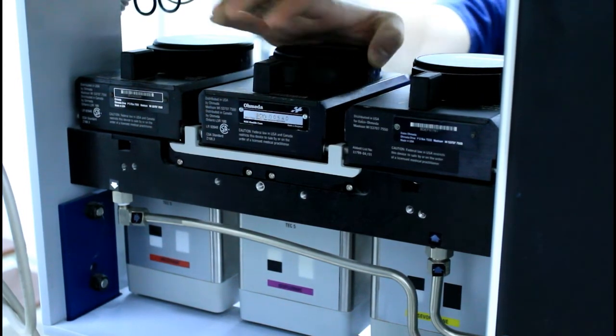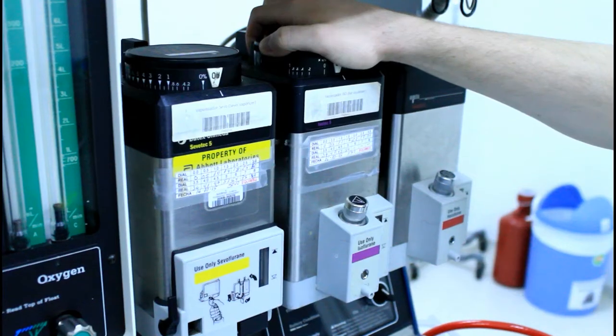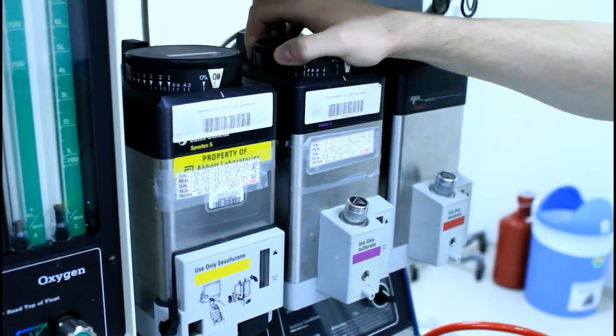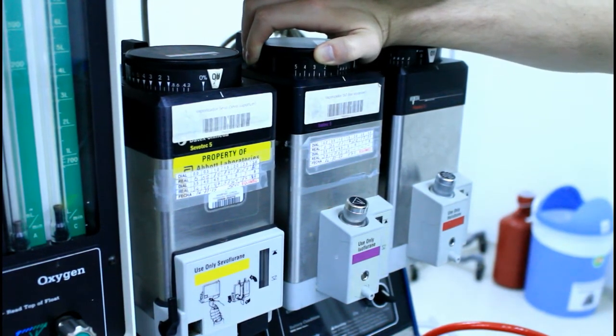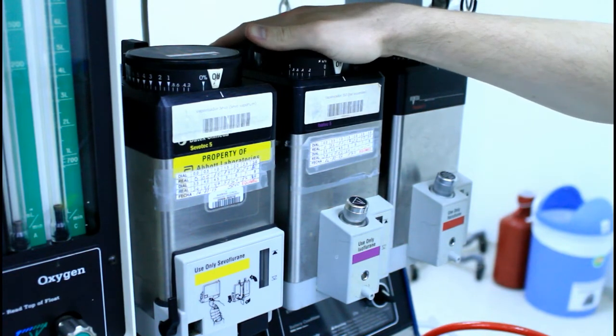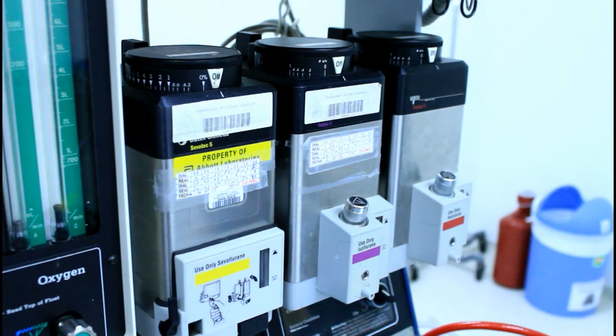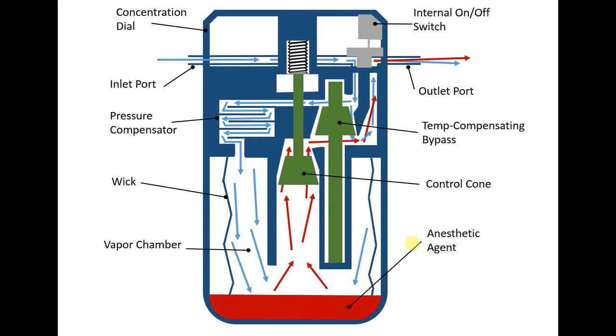The dial that controls vapor flow is located on top of the vaporizer and is turned on by pressing the button located on the backside of the dial and then turning it counterclockwise. When turned on, gas is diverted into the vaporizer chamber. The liquid anesthetic agent will vaporize and join the gas flow to the anesthesia circuit. The amount of anesthetic agent that joins the gas output is proportional to the amount of gas diverted to the vaporizer chamber, which is controlled by the dial.